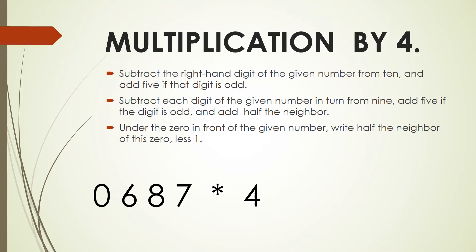Let's do one more example. It's going to be 10 minus 7, which is 3. But we see that we have an odd number, so to that 3 we need to add 5. In total it's going to be 8. We write that 8. Next, we need 9 minus 8, which is 1, and we add half of the neighbor, which is 3. The total is going to be 4. We write that 4.